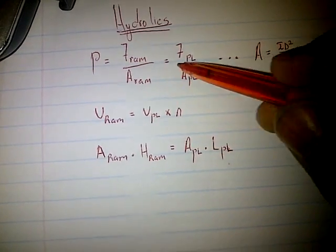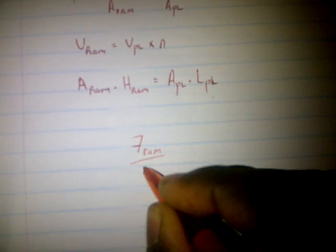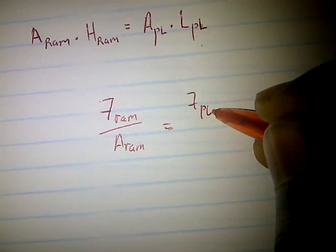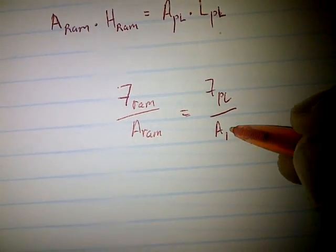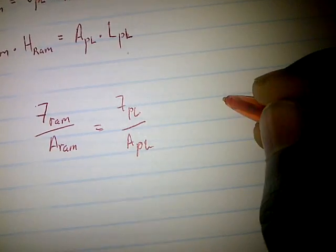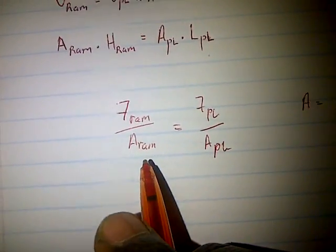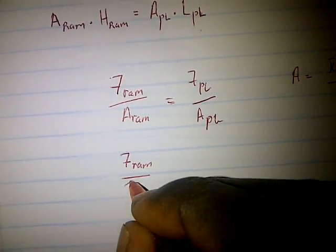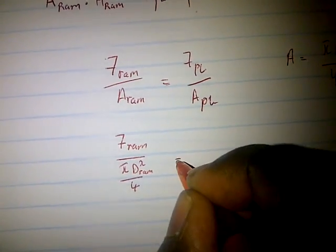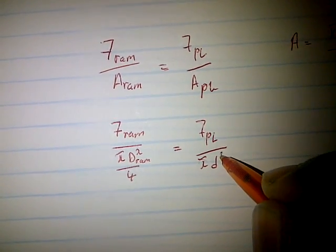Starting with the force-pressure formula: force on the ram divided by area of the ram equals force of the plunger divided by area of the plunger. Remember, area is calculated as π×D² over 4. So we substitute: force of the ram divided by (π×D²/4) equals force of the plunger divided by (π×d²/4), where D is the diameter of the ram and d is the diameter of the plunger.